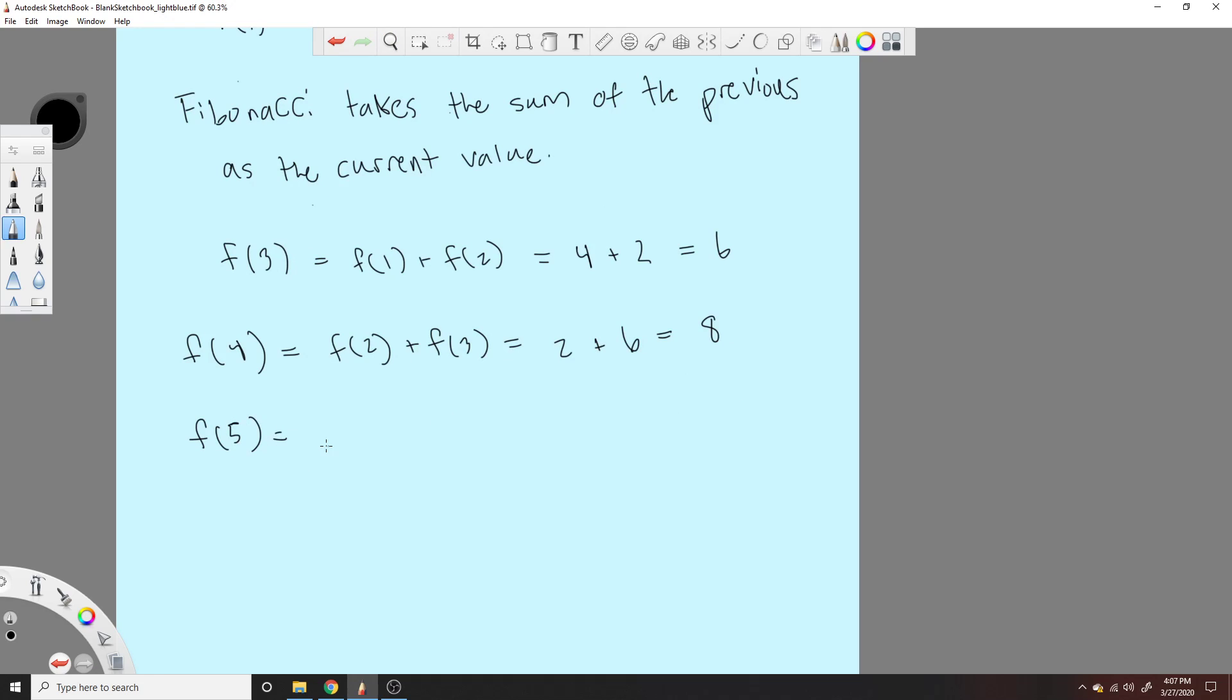f5 is equal to f3 plus f4. f3 we know to be 6 here, f4 we know to be 8. And 6 plus 8 is 14. There you go.